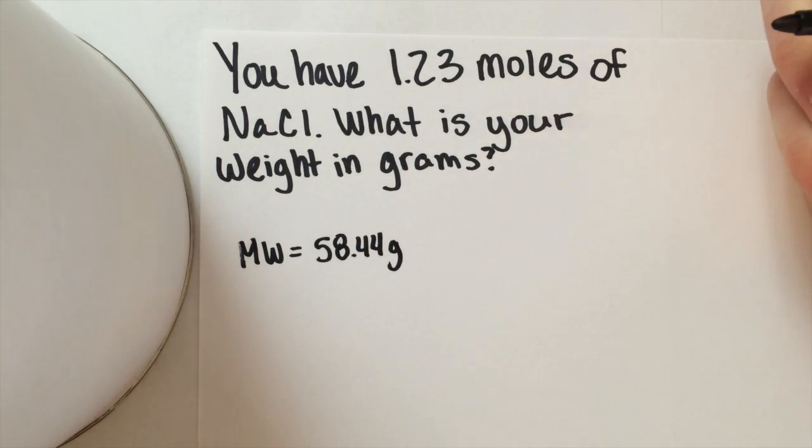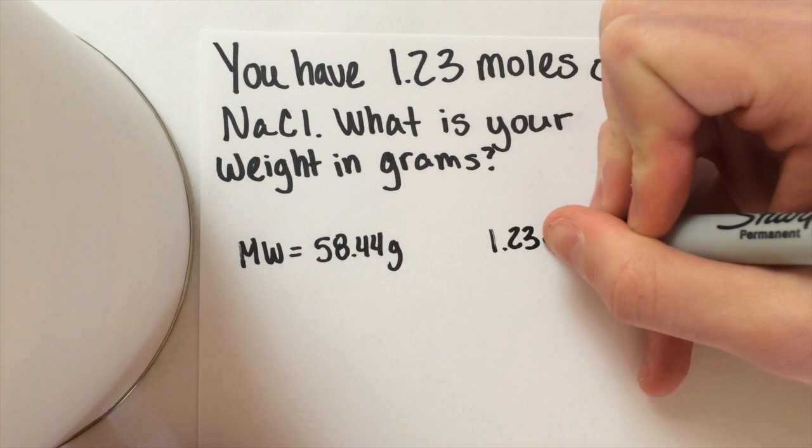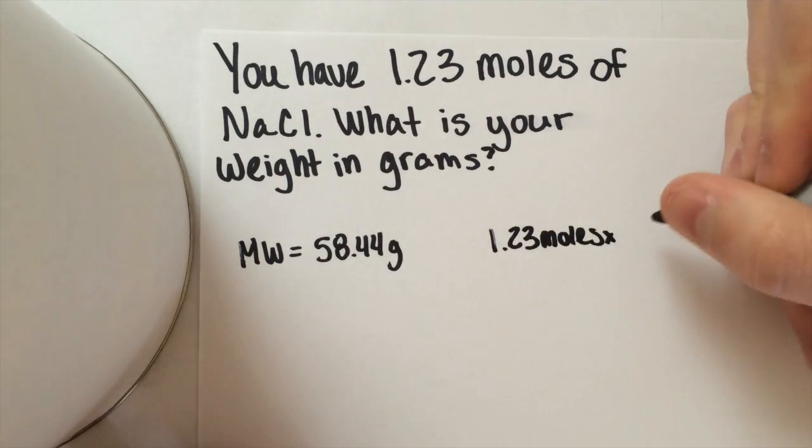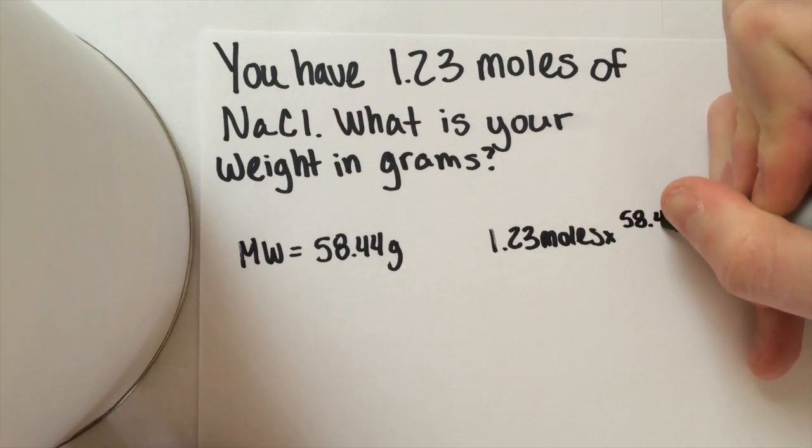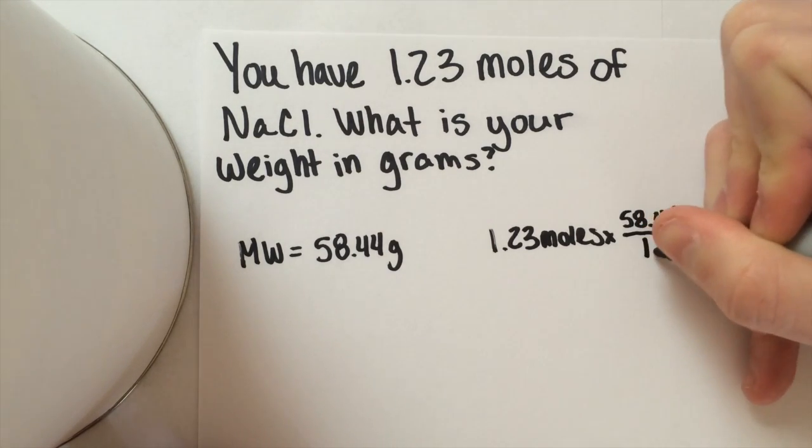Now all you do is multiply your number of moles by the molecular weight and that will give you your mass in grams. So I'm going to multiply 1.23 moles times the molecular weight which is 58.44 grams per mole.